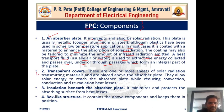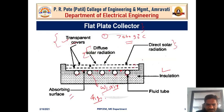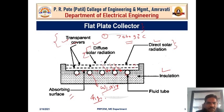Another component is the transparent cover, located at the top of the flat plate collector. One or more sheets of solar radiation transmitting material are placed above the absorber plate. They allow solar energy to reach the absorber plate while reducing convection, conduction, and radiation heat losses. The transparent cover absorbs both diffuse and direct radiation and transfers it to the absorbing surface, preventing heat losses to the surroundings.